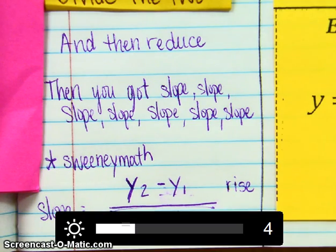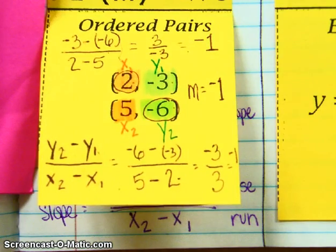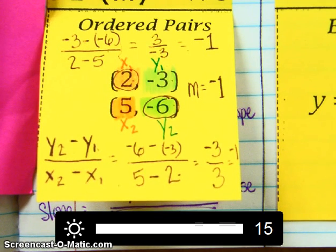Alright. That is all we have for finding slope from two ordered pairs. Thanks for listening. We'll see you next time.